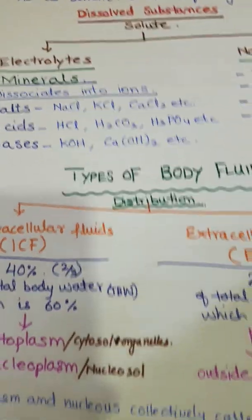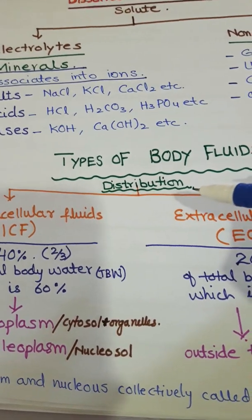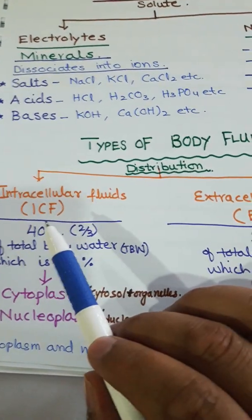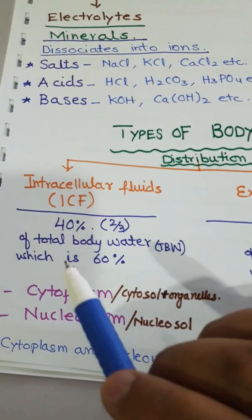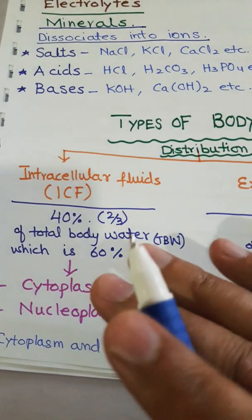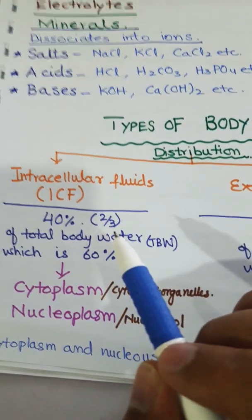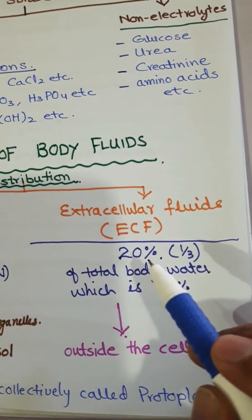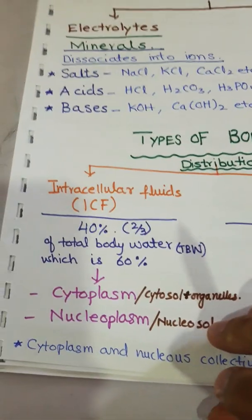Body fluids are distributed into two major categories: intracellular fluids and extracellular fluids. Intracellular fluids make up 40% of total body water — that is two-thirds of the total body water, which is 60% of body weight. Extracellular fluids constitute 20% of total body water, or one-third.